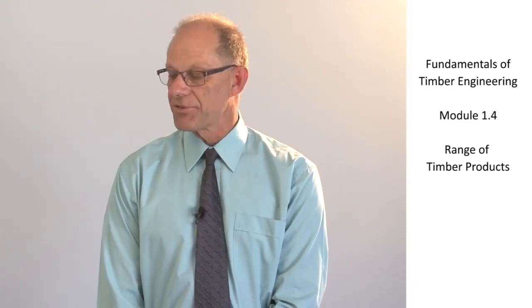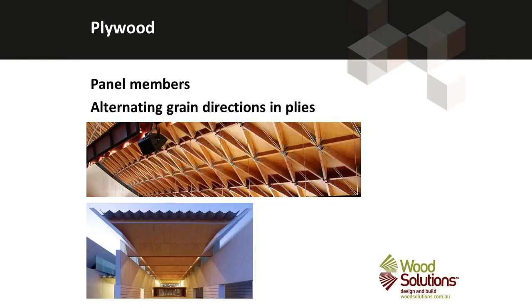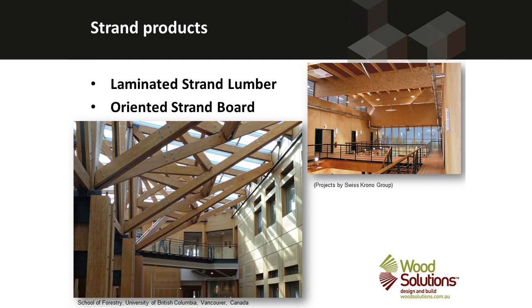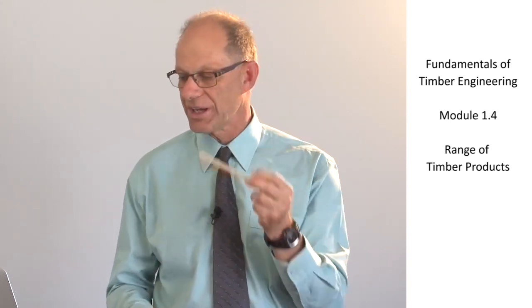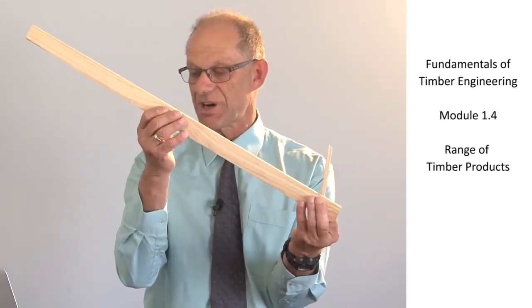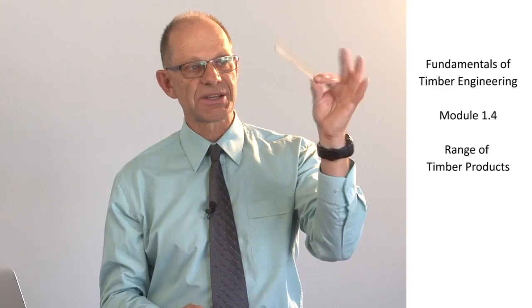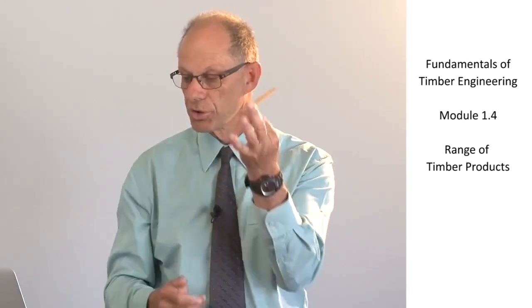Plywood is also made from thin veneers of timber laid up into a panel. These panels have very high in-plane strength, can be used for wall bracing, and can also be used architecturally, making plywood a very versatile material. Strand products are made by taking thin slivers of timber and gluing them into large elements. If glued up into a beam-like element, it's called laminated strand lumber, or LSL. If glued up into a board, it's called oriented strand board. Essentially it's made up of small wafers of wood all glued together.